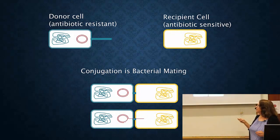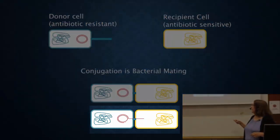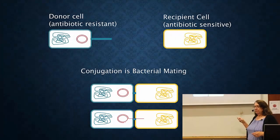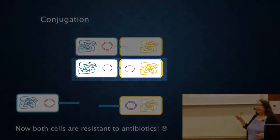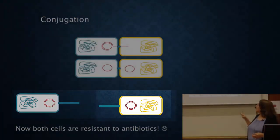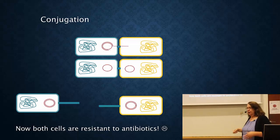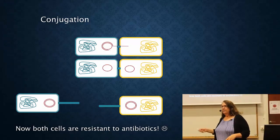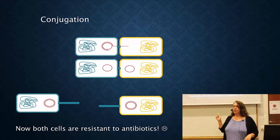Then a pore — a small hole — between the two cells is formed. The plasmid makes enzymes that cause it to cut one strand of the DNA and bring it into the recipient. Shortly after, both cells have one strand of DNA, which is then copied and replicated, ending up with one plasmid in each cell. This cell can now go ahead and conjugate with other cells, so both cells are now resistant to antibiotics and both can transfer. In the lab, this can take place in a couple of minutes — all you have to do is put the cells together. It's incredibly fast, and this is the most common way for resistance to spread.